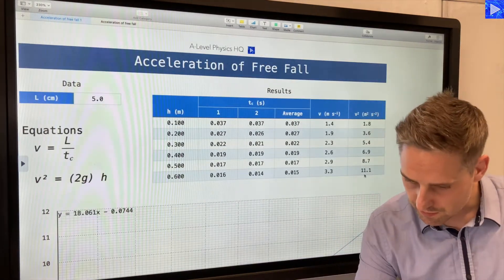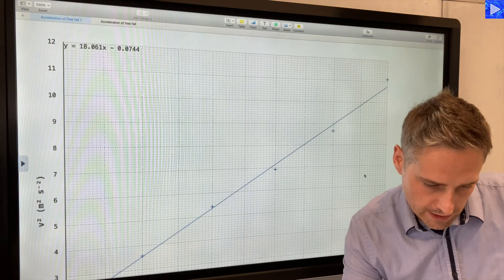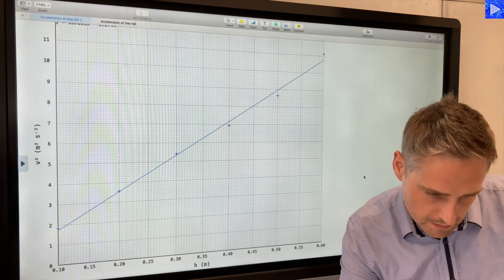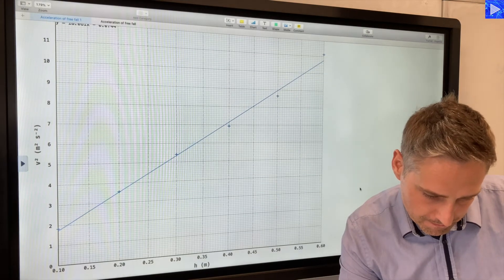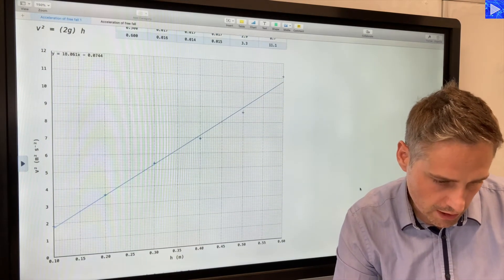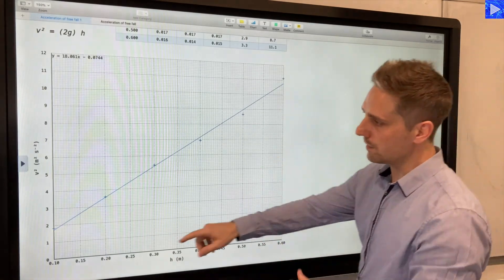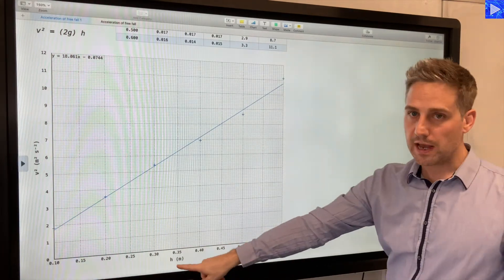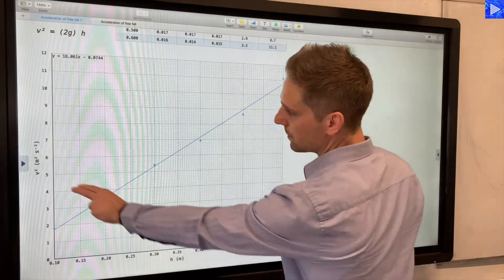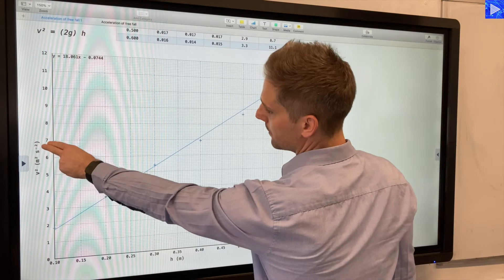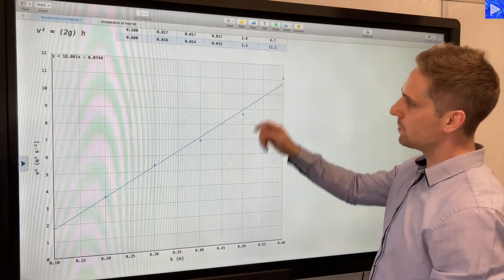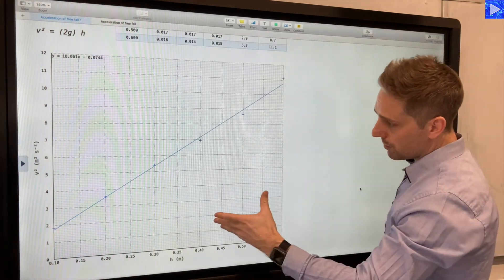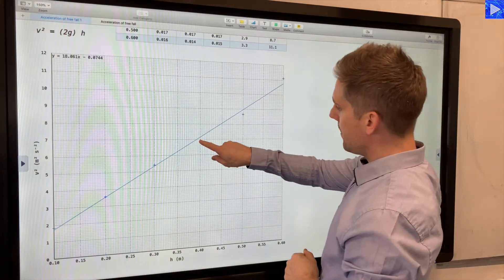Now we scroll down here and here is the graph we plot from that data. On the y-axis, I have v² in meters squared per second squared. On the x-axis is h in meters, just as it was in the table there. Here on my data plots, reasonably straight line, straight trend.